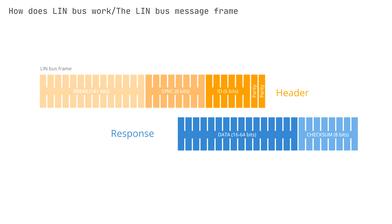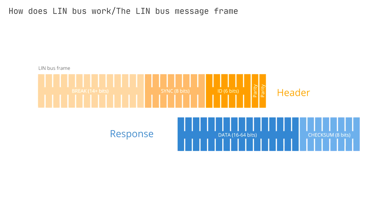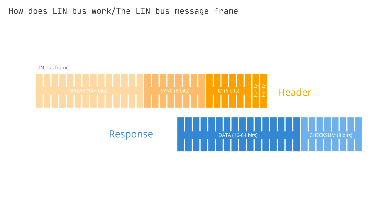To understand the LIN frame, let's look at each frame field. First, the sync break field (SBF), also known as the break, is minimum 13 plus 1 bits long, and in practice most often 18 plus 2 bits. The break field acts as a start-of-frame notice to all LIN nodes on the bus. The 8-bit sync field has a predefined value of 0x55, in binary 0,1,0,1,0,1,0,1. This structure allows the LIN nodes to determine the time between rising and falling edges, and thus the baud rate used by the master node.